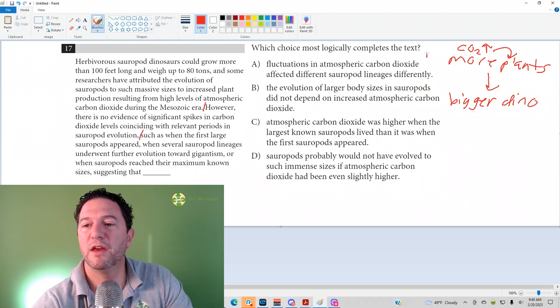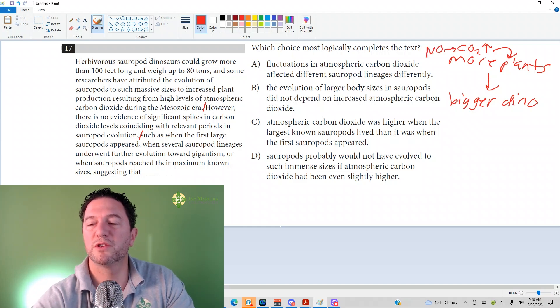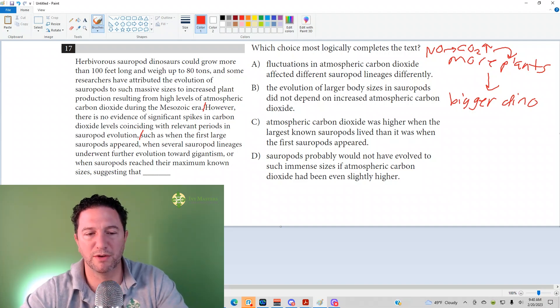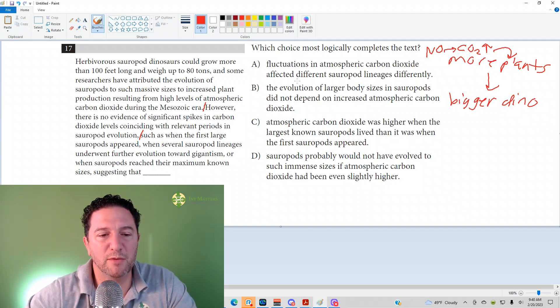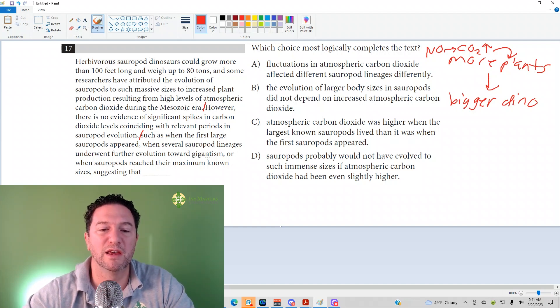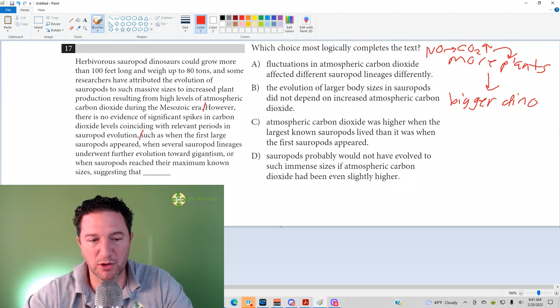This is a big no. So if there's no increase in carbon dioxide, that's not responsible for more plants leading to a bigger dinosaur. And then we pick up with such as when the first large sauropod appeared, when several sauropod lineages underwent further evolution towards gigantism. What's gigantism? It's what it sounds like, when the dinosaurs got gigantic or when sauropods reached their maximum known sizes.